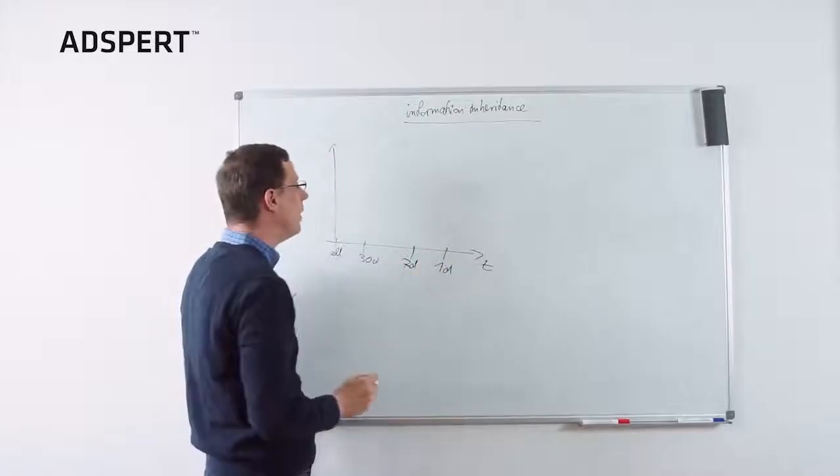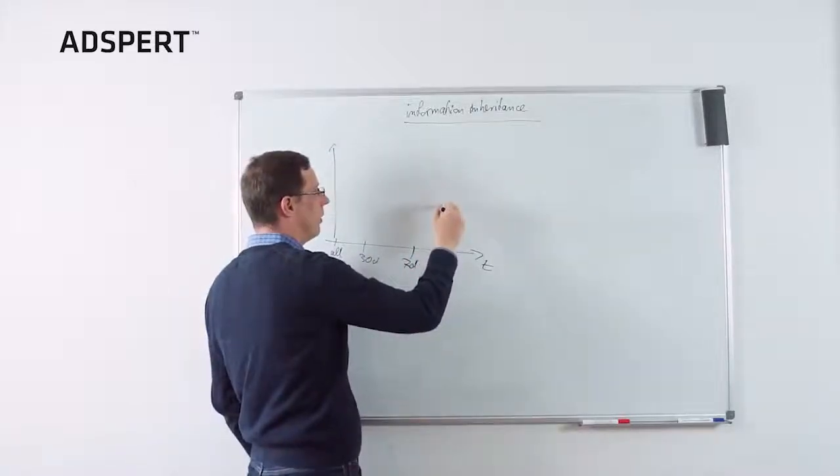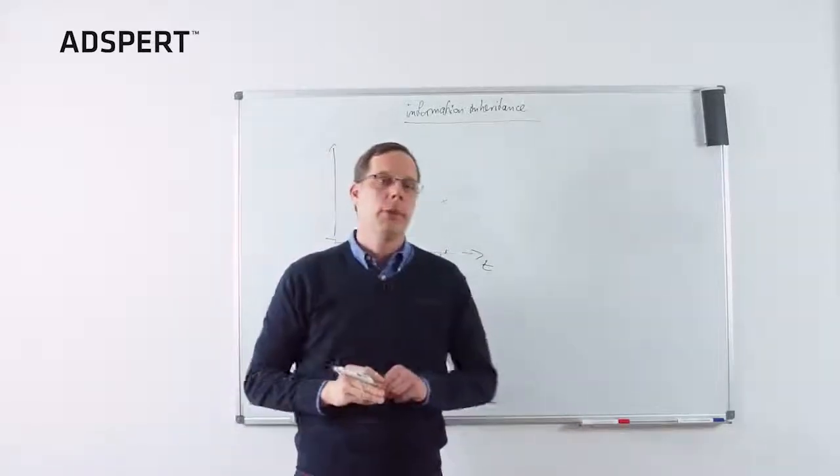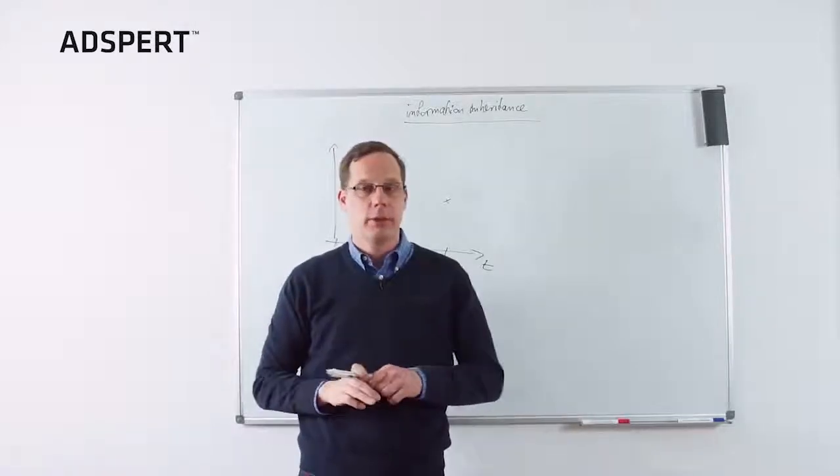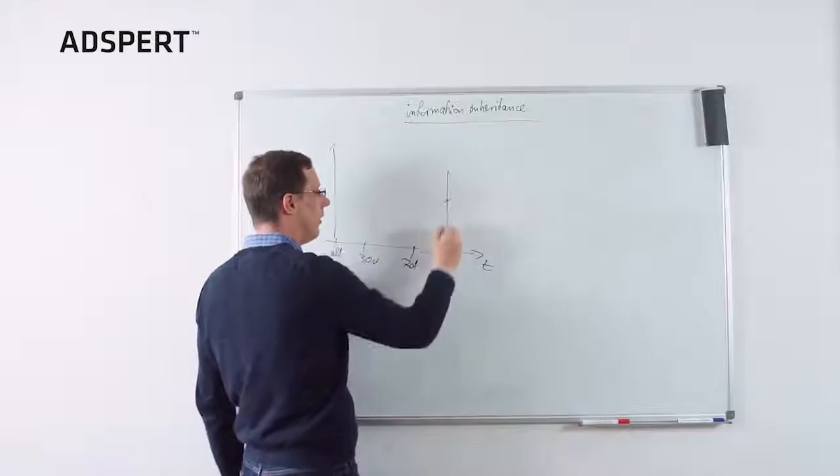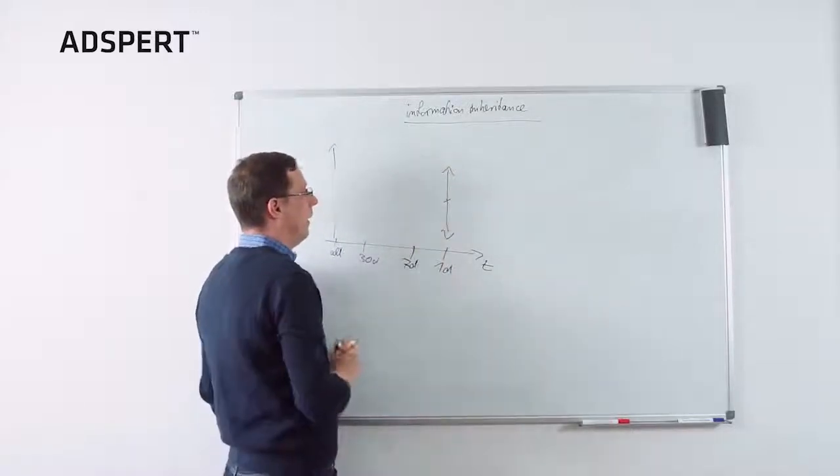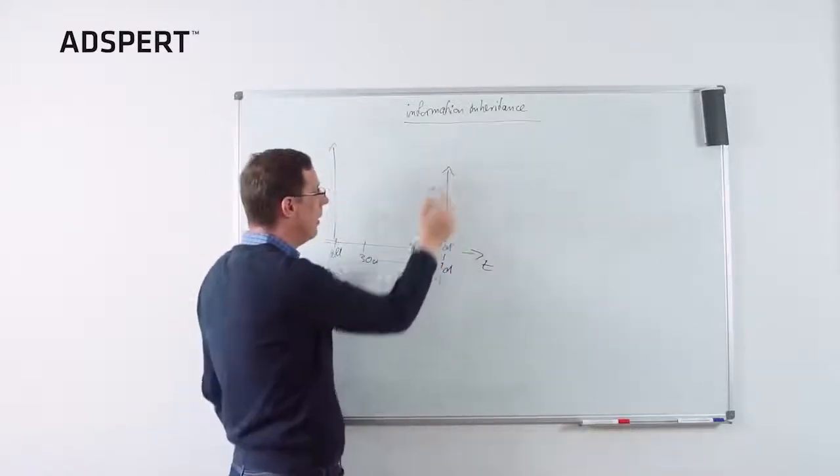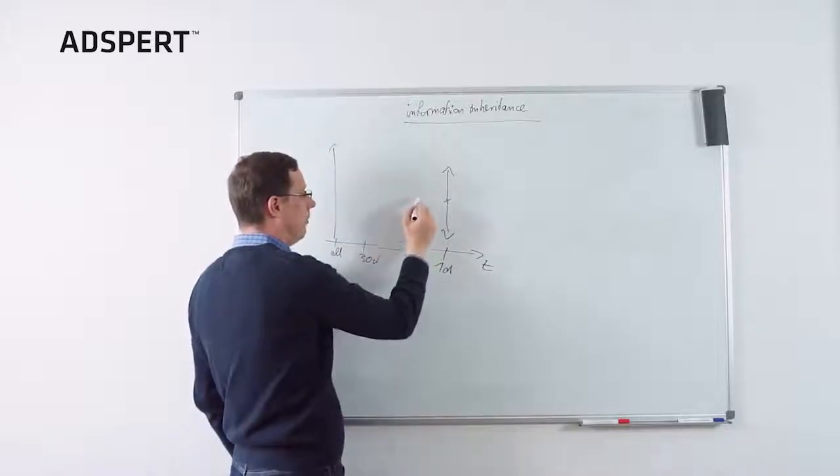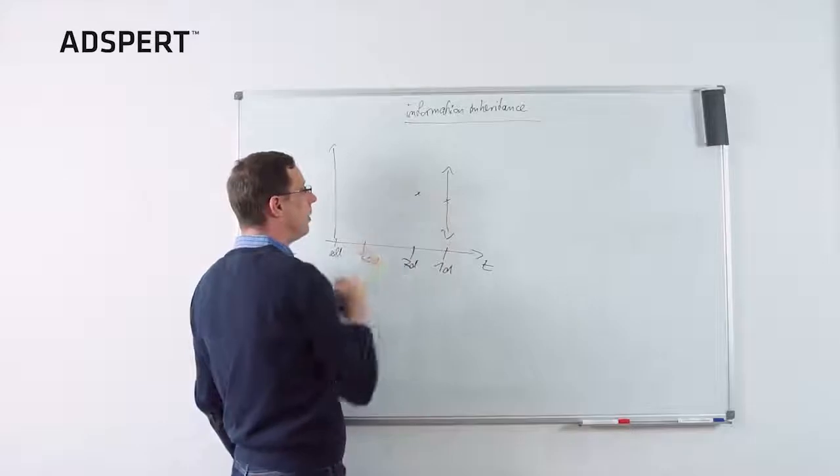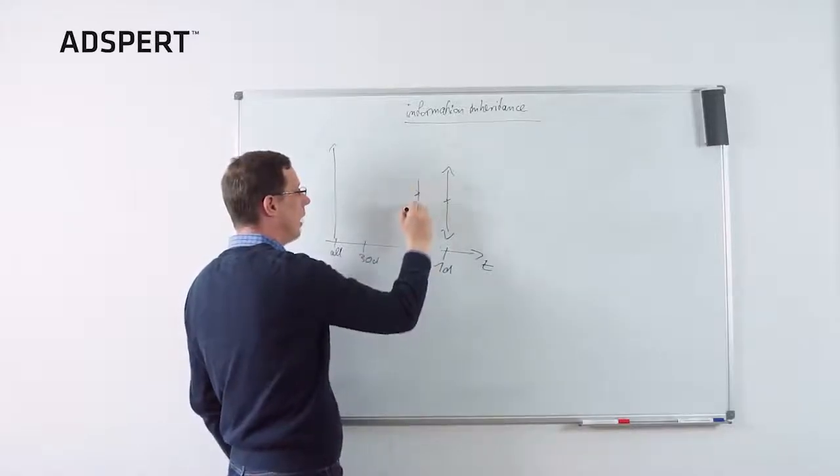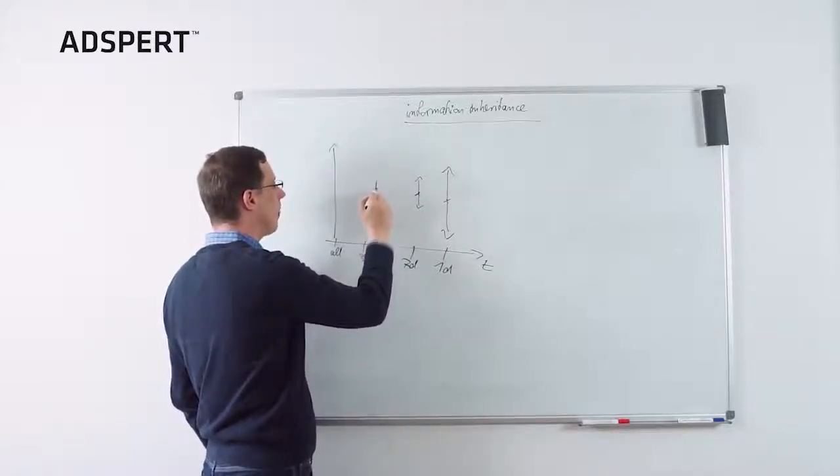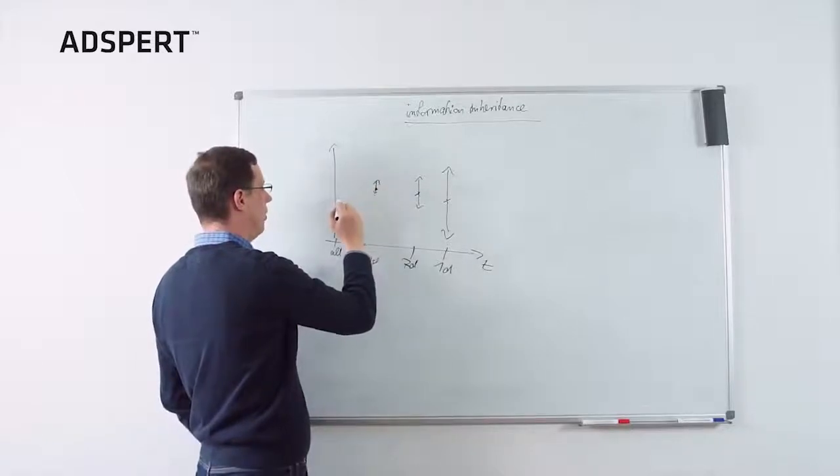So if you have yesterday's data and perhaps one conversion and 10 clicks, the conversion rate or the mean is 10%, but of course it would be stupid to take the 10% as an estimate because it's quite imprecise due to the low data. So the confidence interval in fact is really high. That's the range where the true conversion rate is in with a high probability. If you take the last week's data, the uncertainty is reduced. Same for monthly data and perhaps all account data.